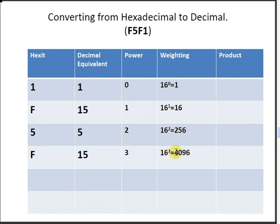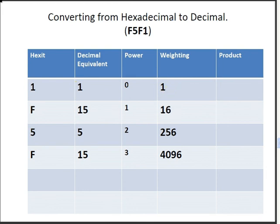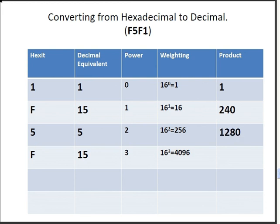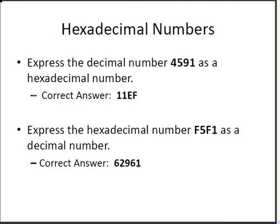We then multiply the decimal equivalents by the weightings: 1 times 1 is 1; 15 times 16 is 240; 5 times 256 gives us 1,280; and 15 times 4,096 gives us 61,440. We simply add up all those numbers, and our answer is 62,961. So the correct answer to the second example is 62,961.